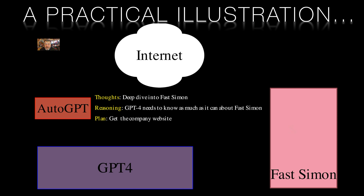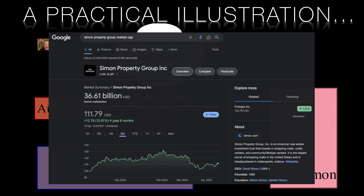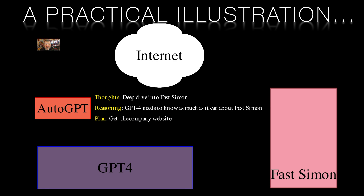Suddenly, Auto-GPT was elated. It believed it had found a hidden gem — a tech company that was massively undervalued by any industry metric. Its enthusiasm was infectious, and it dove headfirst into this newfound opportunity. Watching Auto-GPT do this, I couldn't help but feel a mixture of admiration for its zeal and despair at its misguided efforts. As time passed, Auto-GPT continued to analyze and query the information it had gathered misguidedly on Simon Property Group rather than Fast Simon. Then, about 15 minutes into its thrilling endeavor, a moment of realization struck — Auto-GPT finally decided that Simon Property Group was not, in fact, a tech company, and thus not a suitable acquisition target for Nvidia.